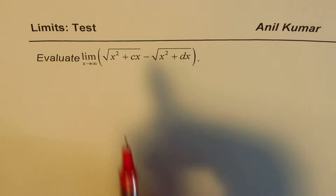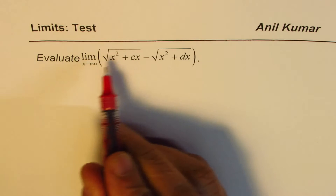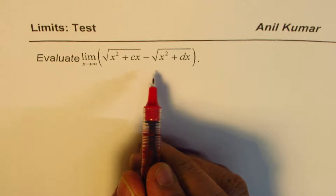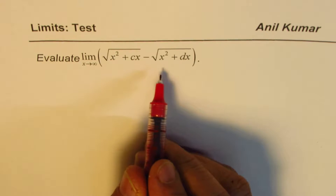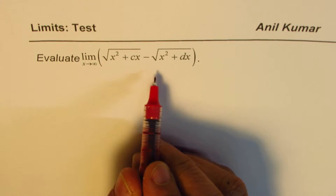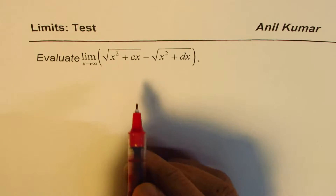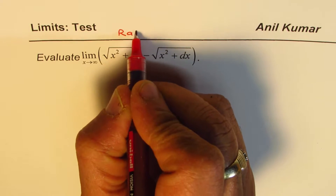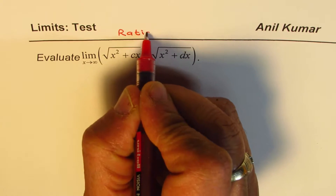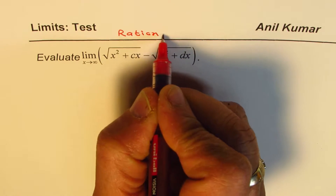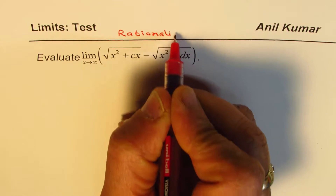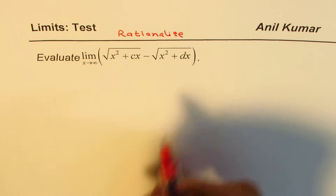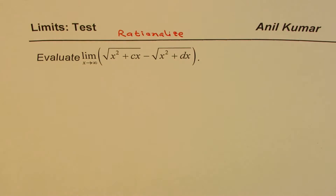Whenever you have a function with square roots, the best way to find limits is to rationalize. So the strategy is to rationalize. Now we'll see how to rationalize this function.